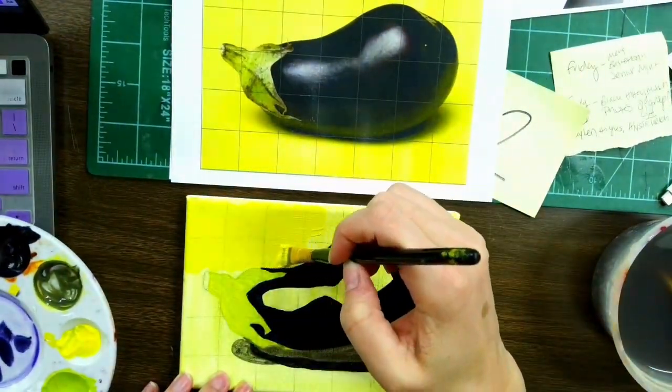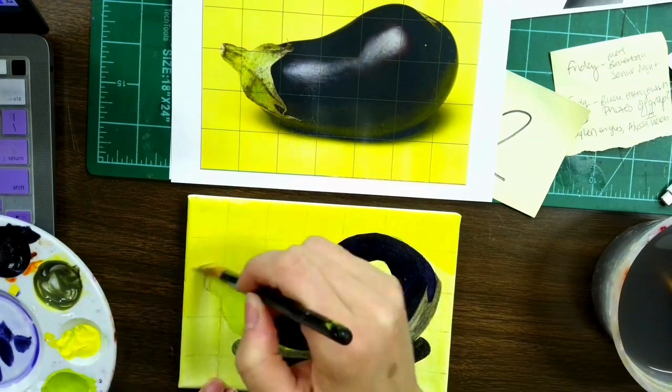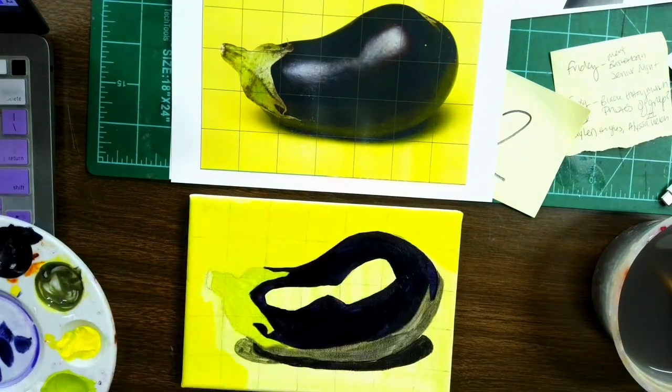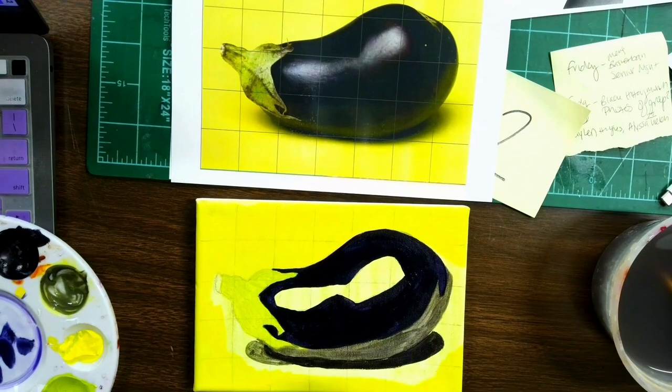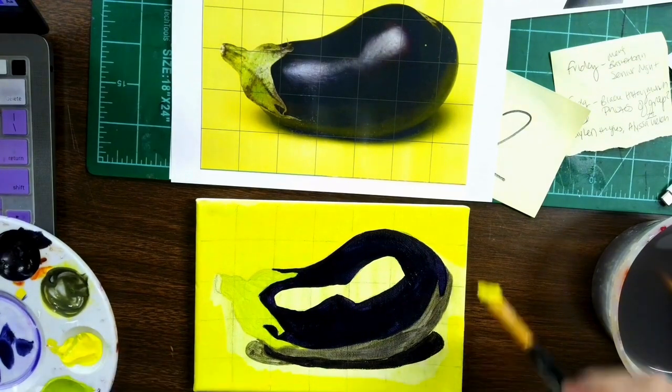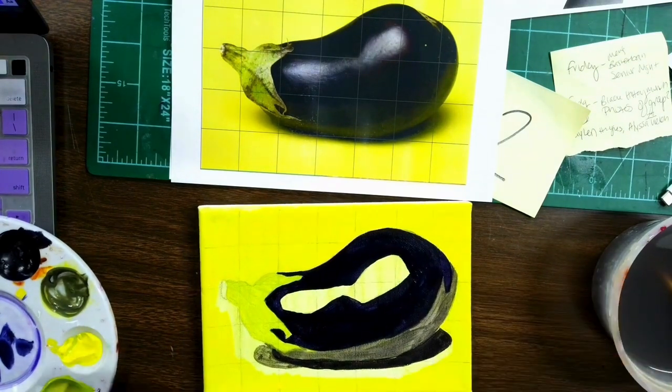My background has dried, so this is a great opportunity to start going in with that second coat. Now, yellow is really light, so keeping that in mind, I will have to do multiple coats with this just to get the lines to disappear.